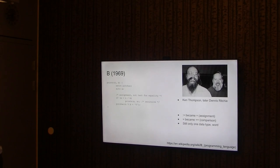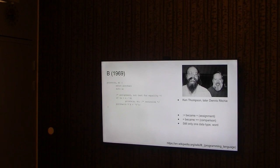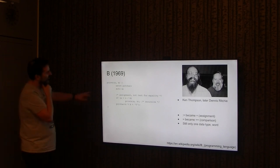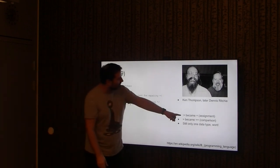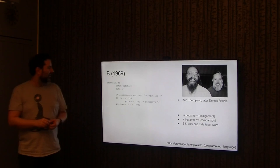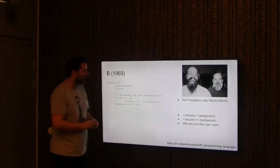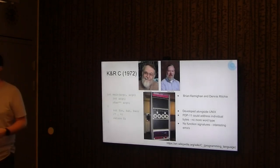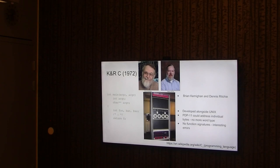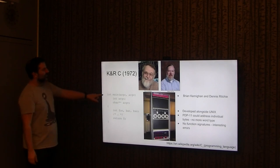This leads us to some familiar faces. Ritchie is one of the C guys, and he was also involved in developing B — and now it's starting to look familiar. Changes from BCPL: colon-equals became equals for assignment, and they changed equals for comparison. Still only word type, but it's getting there. Which leads us to 1972 — KnR C. Brian Kernighan and Dennis Ritchie developed this.